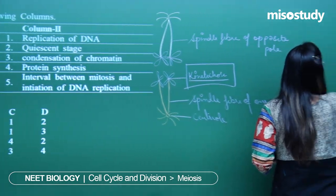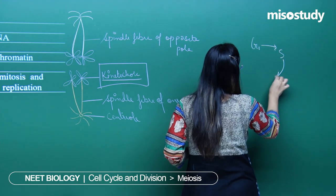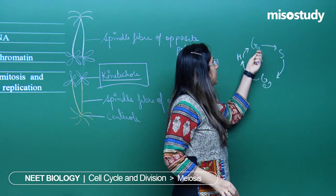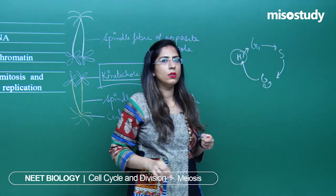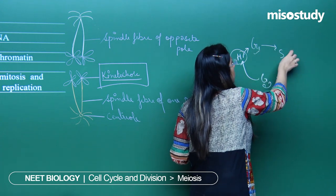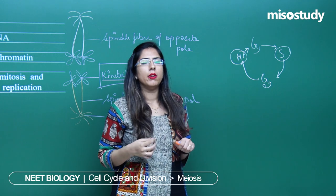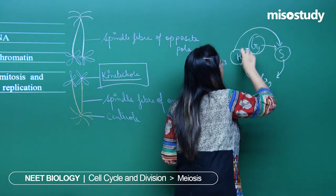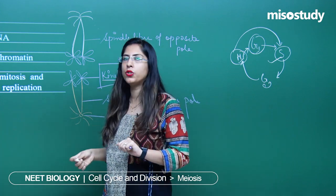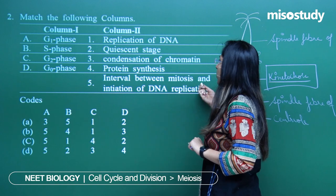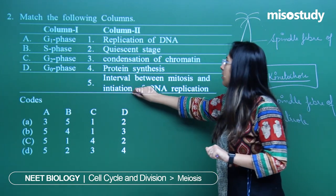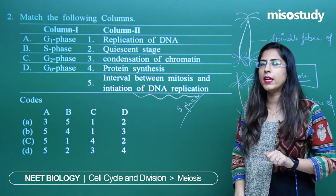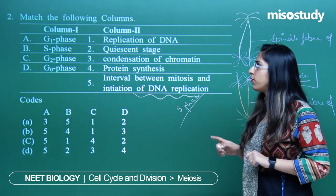G1 phase is that phase in which the cell is between mitosis and entry into S phase. It is an intermediate between mitosis and the S phase — the synthesis phase — in which DNA replication occurs. G1 phase is the interval between mitosis and initiation of DNA replication, so the correct option for G1 is the fifth option.